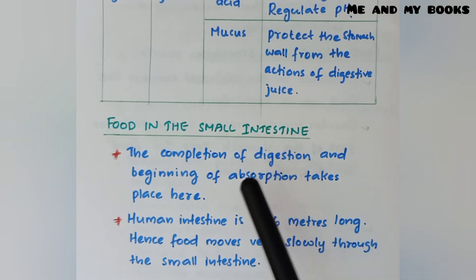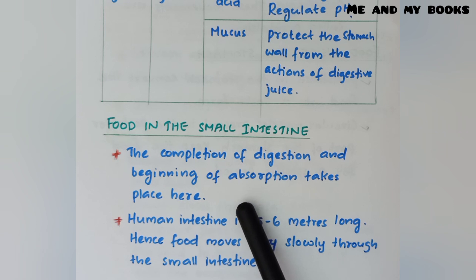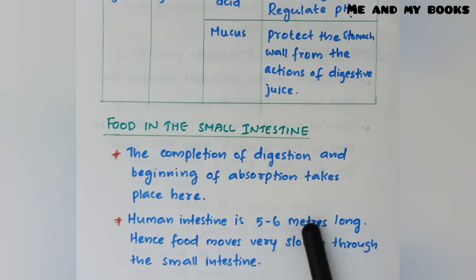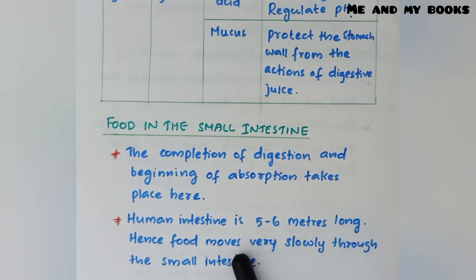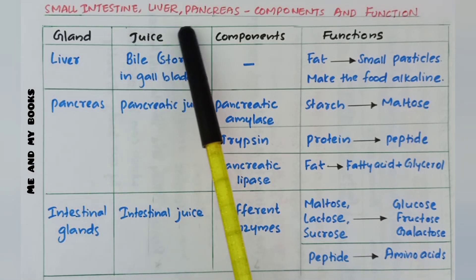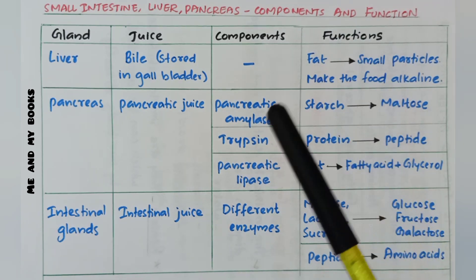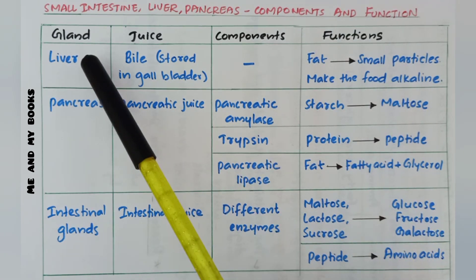From the stomach, food reaches the small intestine. The completion of digestion and beginning of absorption takes place here. The human small intestine is five to six meters long, so food moves very slowly through it.